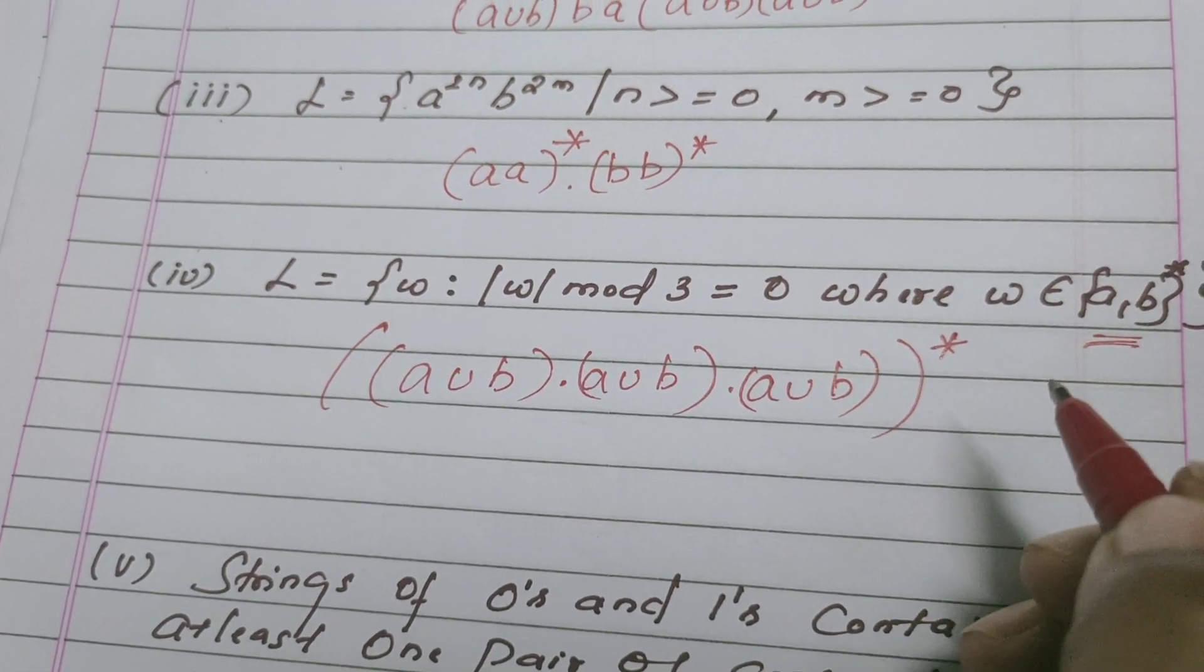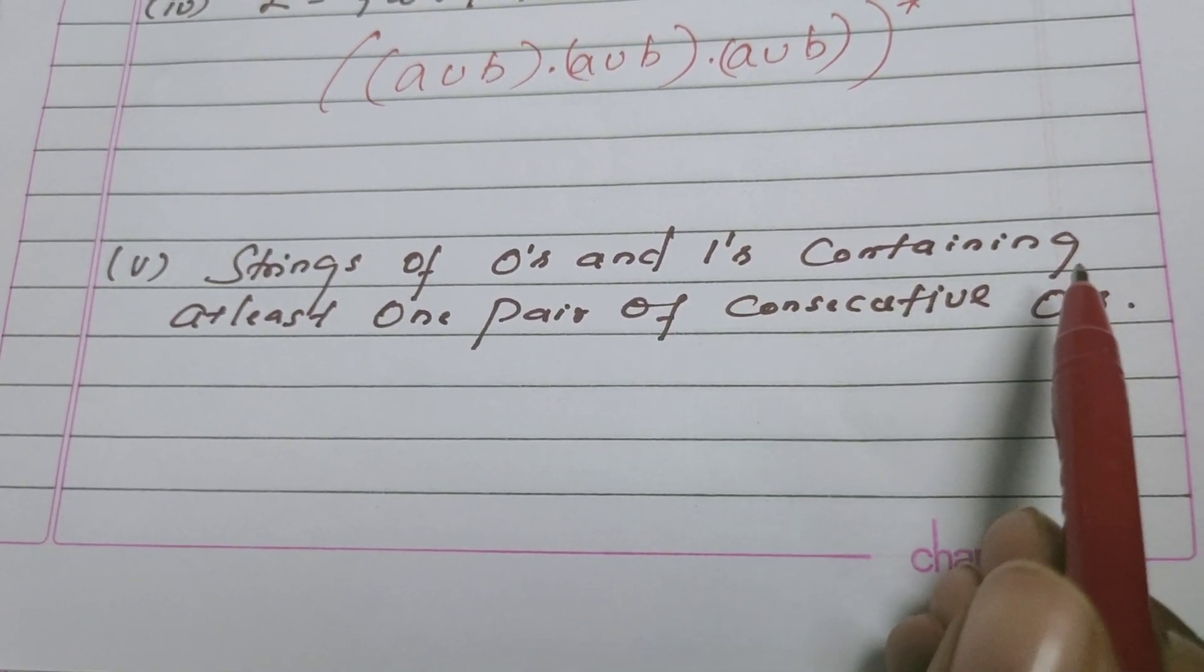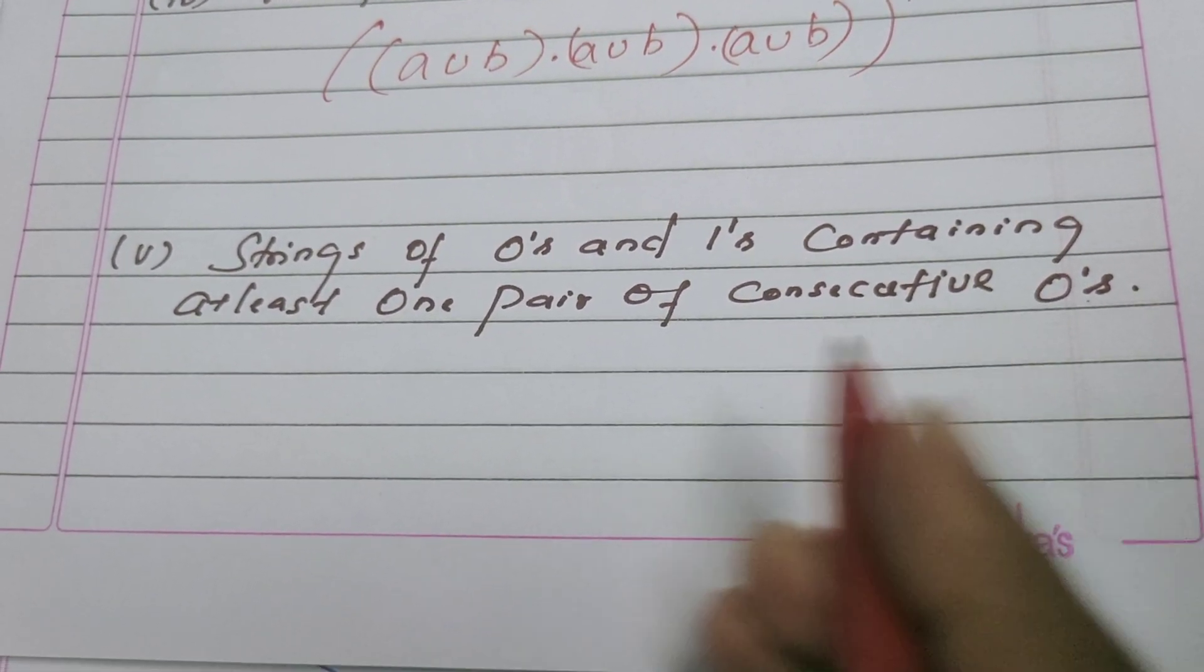Let's come to the last question: strings of 0's and 1's containing at least one pair of consecutive 0's.